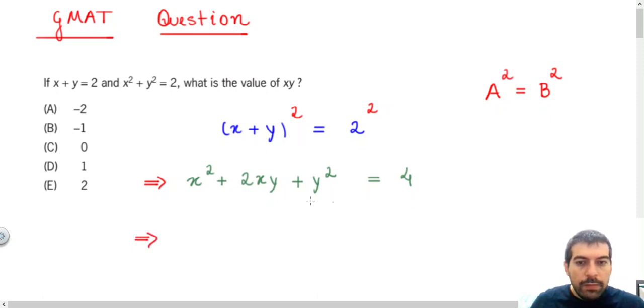Look, I will leave the terms x squared and y squared in the left side, and I will keep this 4 in the right side of this equation, and I will send this term to the other side.